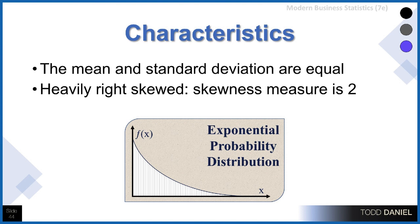The mean and the standard deviation — and this is also like a Poisson distribution — are equal. But the exponential probability distribution is heavily right skewed. In fact, if we look at the skewness measure, it will be equal to the number 2.